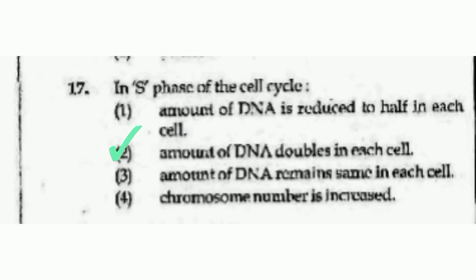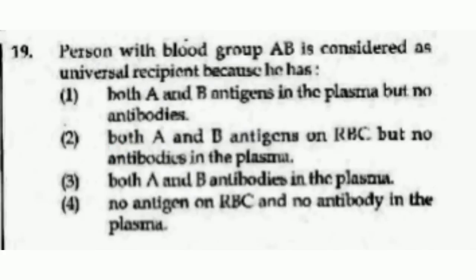A person with blood group AB is considered the universal recipient because he has — the right answer is option number 2, both A and B antigens on RBC but no antibodies in the plasma.